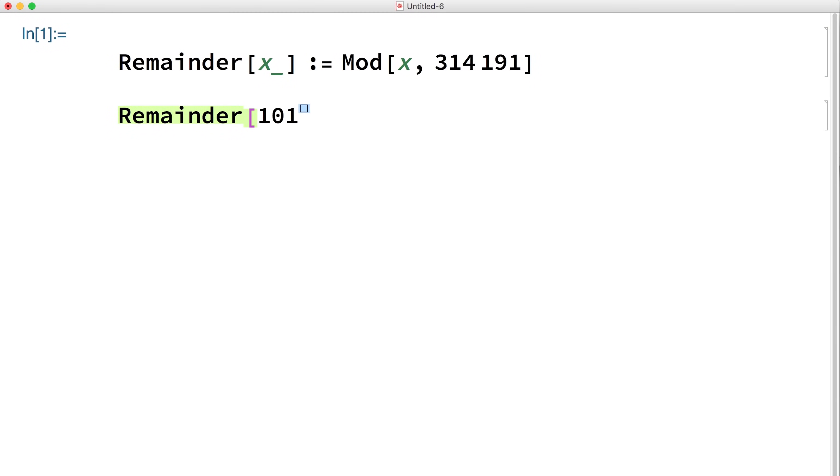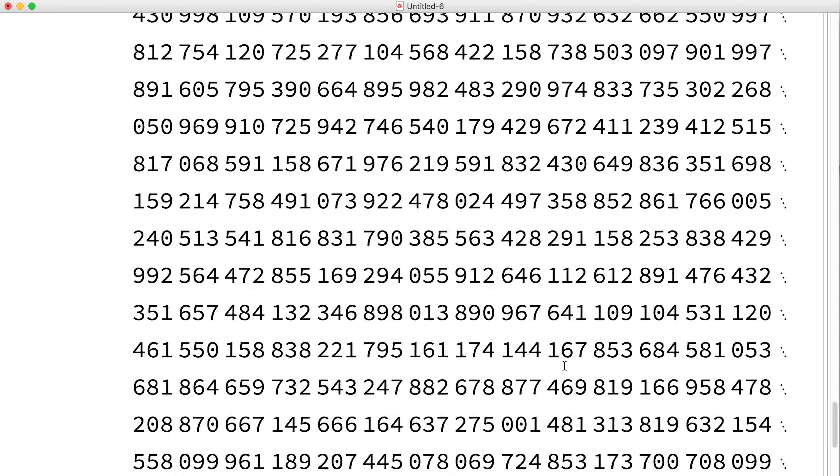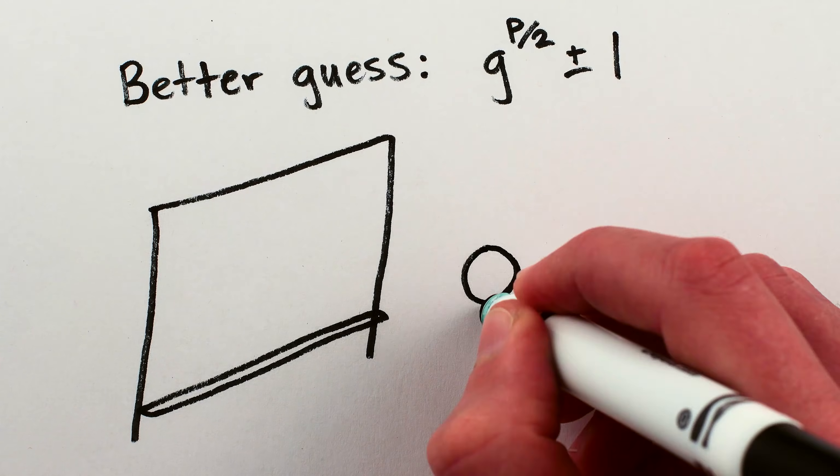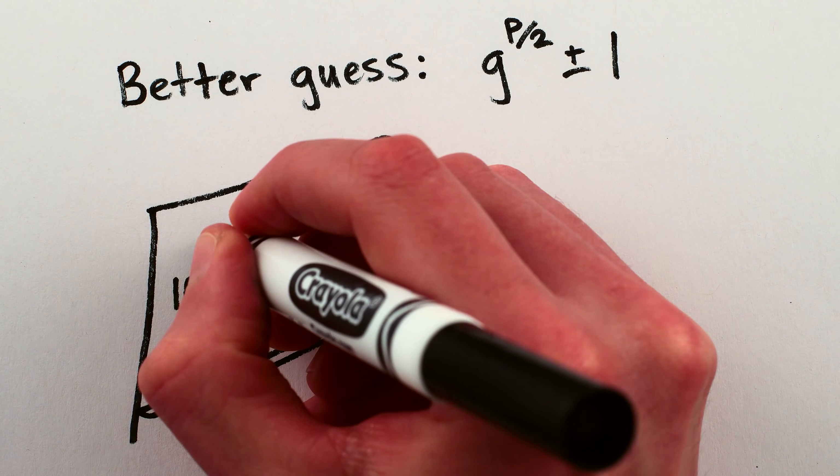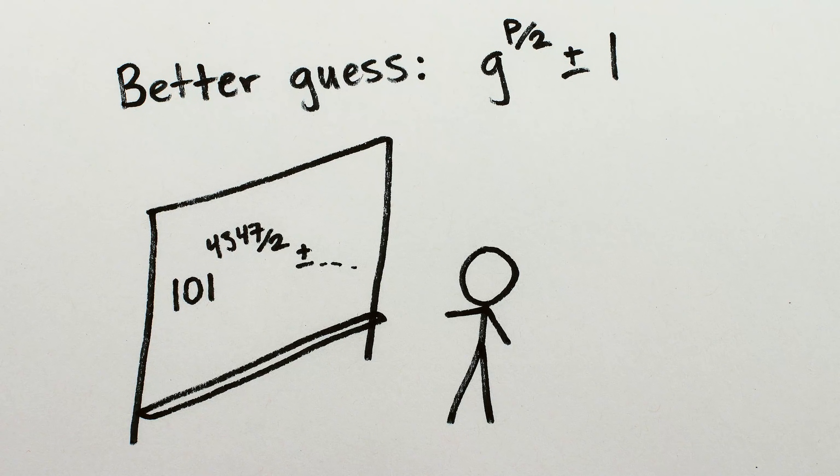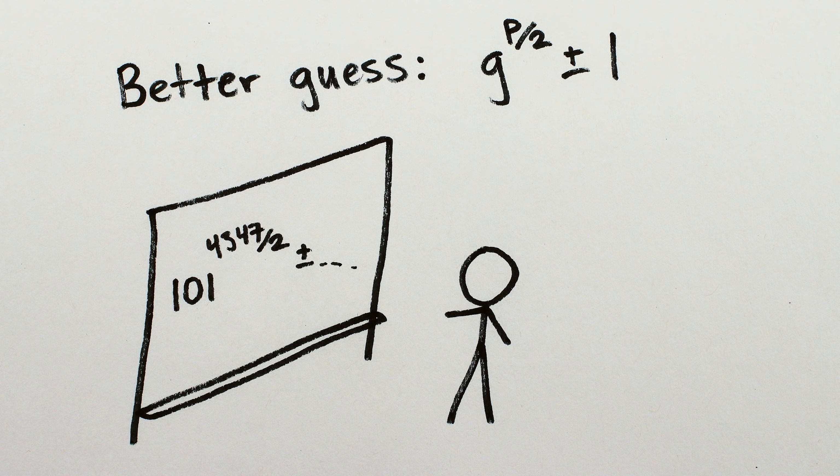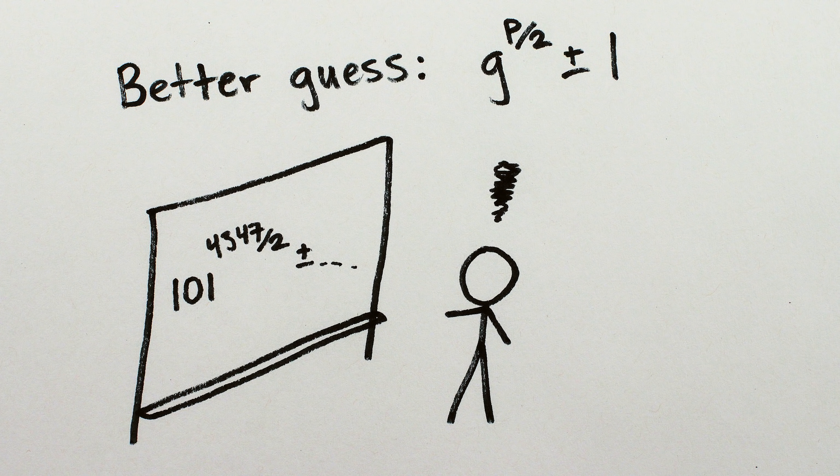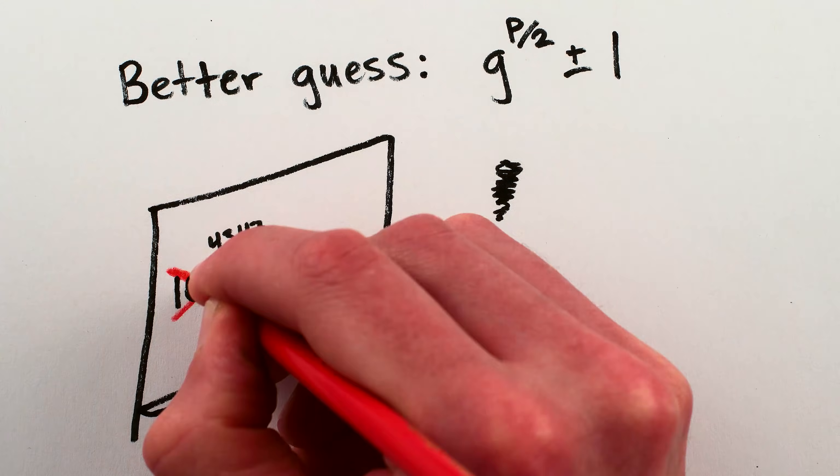And you can check that 101 to the 4347 is indeed exactly one more than a multiple of 314191, though it's a very, very, very big multiple. So to get our better guess for a number that shares a factor with 314191, let's take 101 to the power of 4347 over 2 plus— wait, crap, 4347 is odd, so we can't divide it by 2 and get a whole number, so we have to start over.